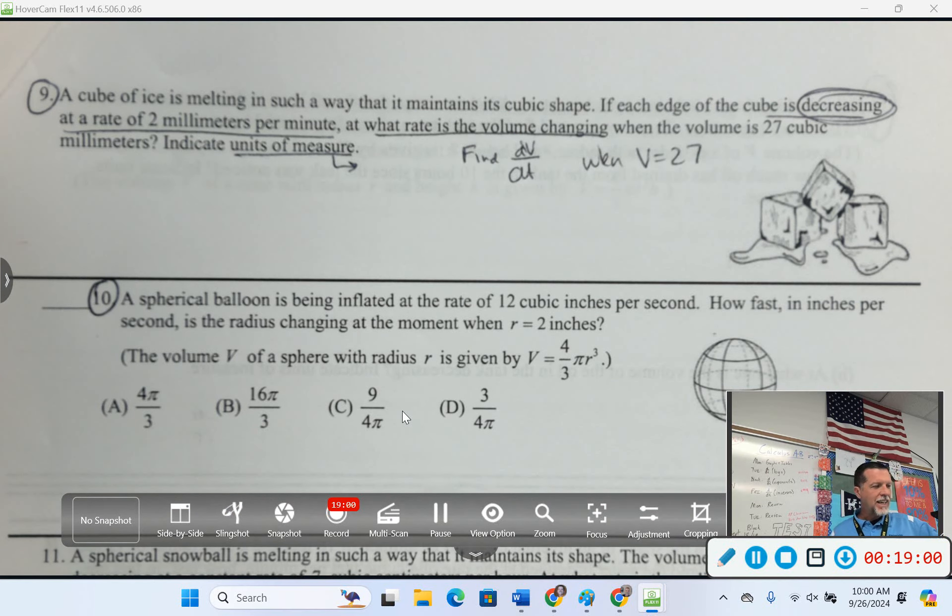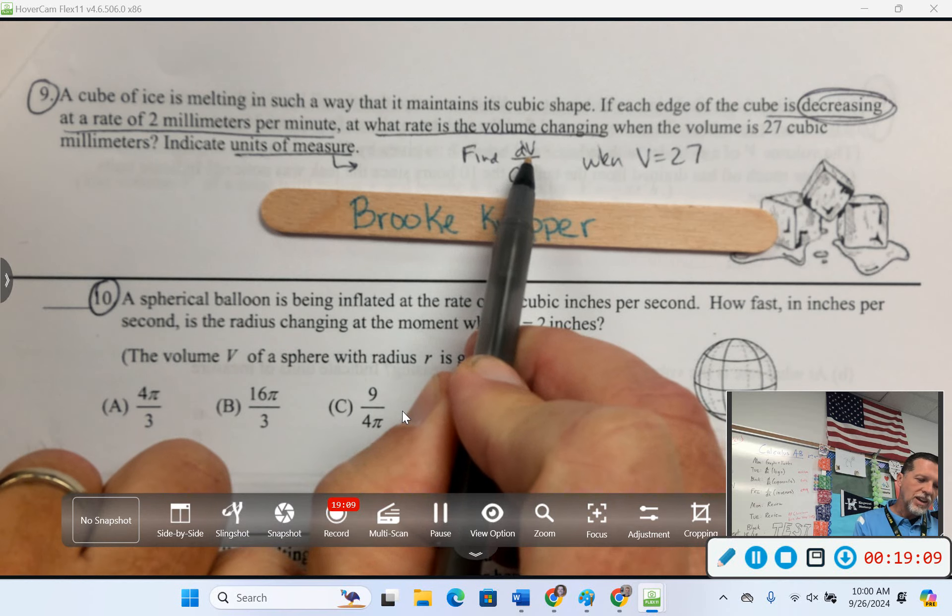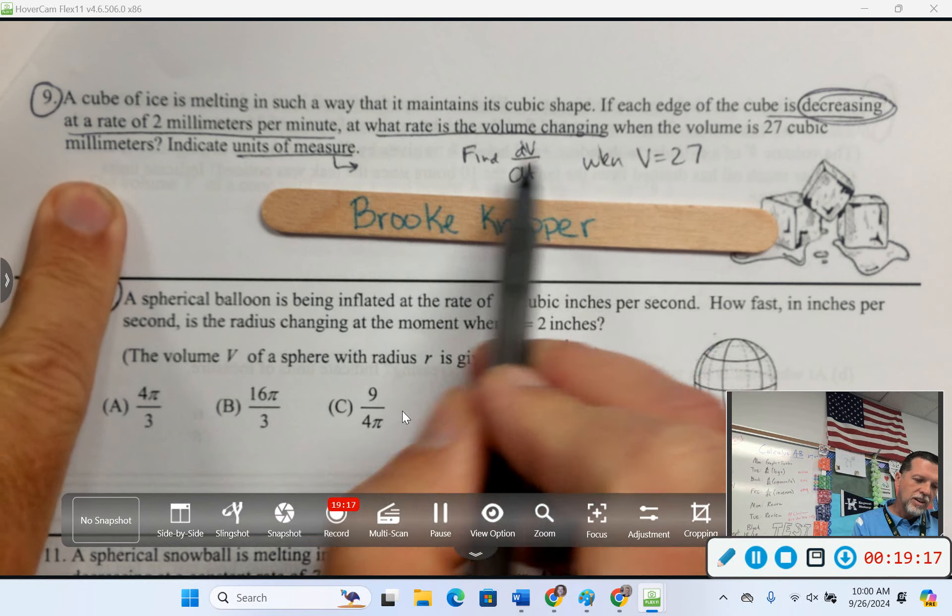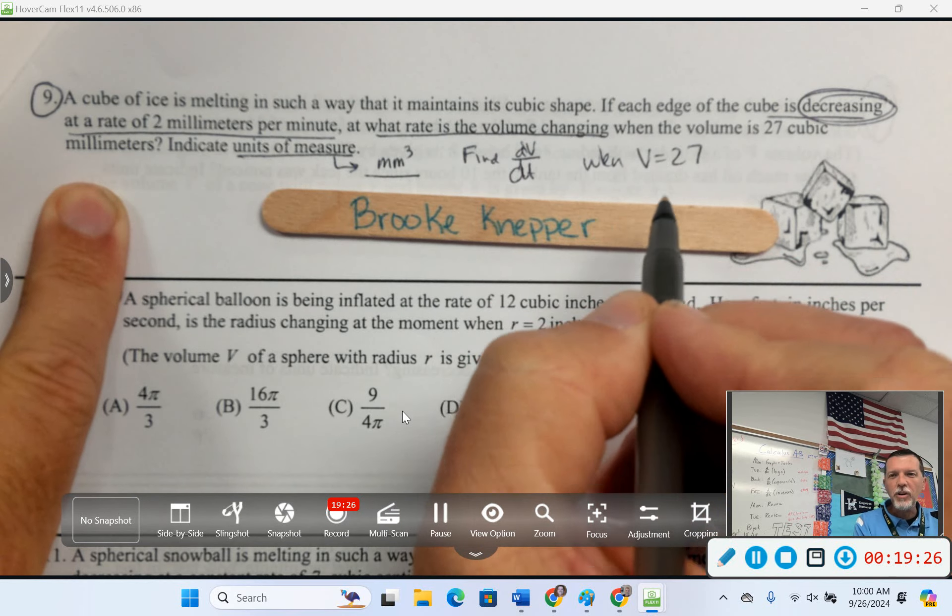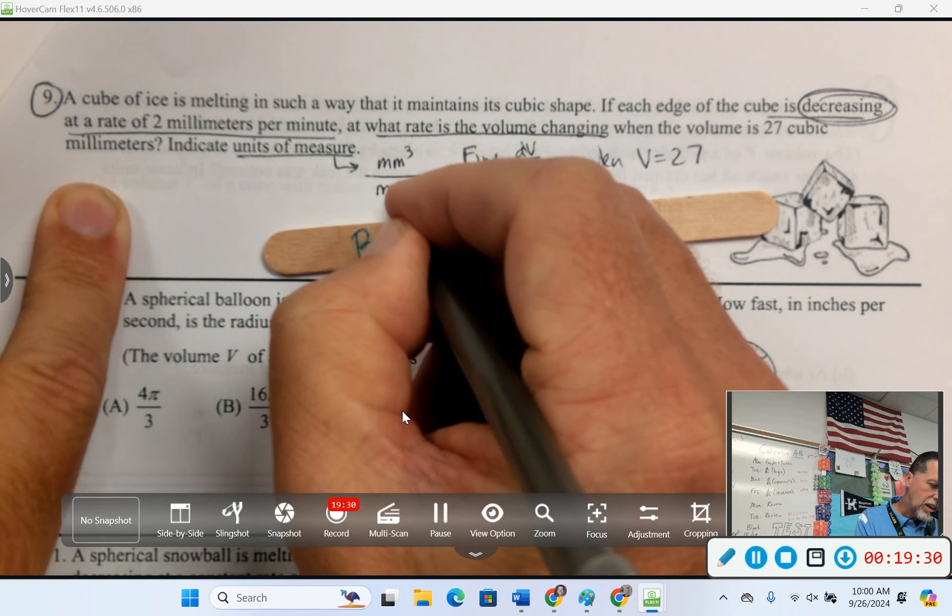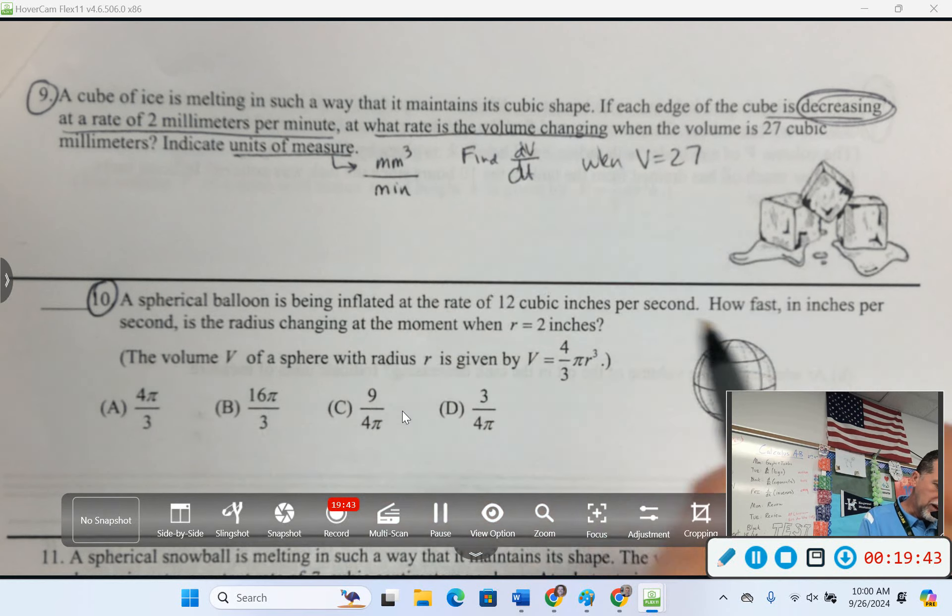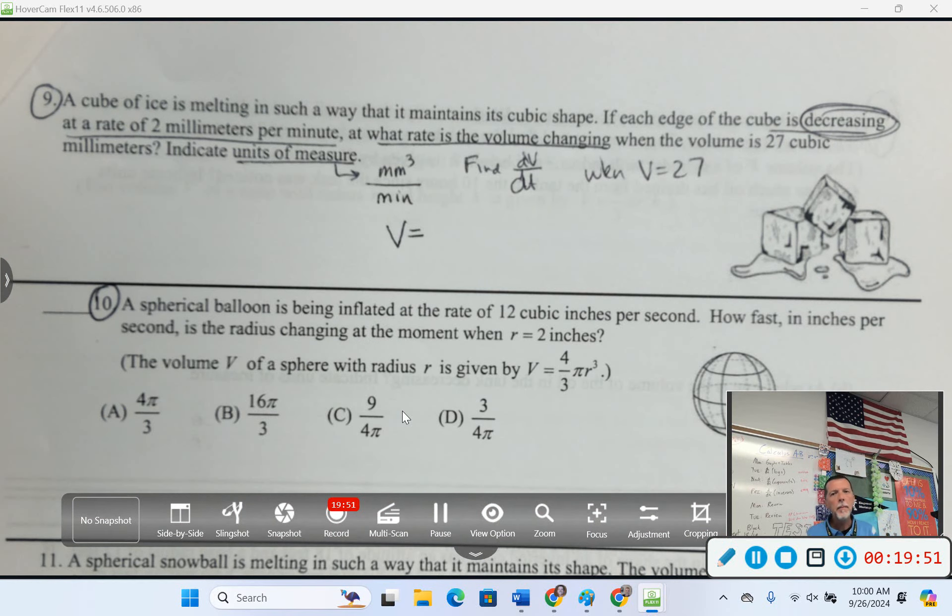So, units of measure for dV/dt. Brooke, what are those units going to be? What are the units of volume going to be? Millimeters cubed. And dt is time. And for this problem, what time unit are we using? Minutes. All right, so there's one point for the problem already taken care of. Our answer is going to be millimeters cubed per minute. The volume is millimeters cubed. Time is in minutes. Okay, I'm going to need an equation for volume so that I can get dV/dt. It didn't give me the volume of a cube, but surely you don't need to be given the volume of a cube.